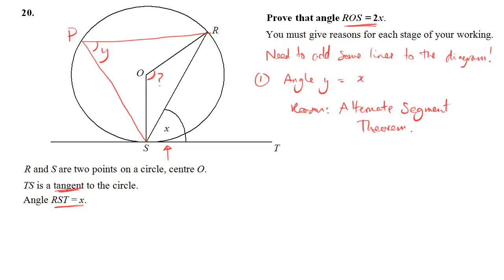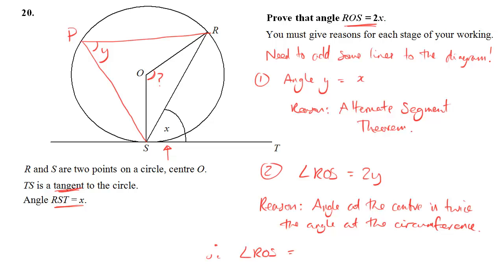The reason I've done this is because angle Y can link to the angle that we want. So, step 2 of my proof is to say that angle ROS, the one that I want, is 2 times Y. The reason: angle at the center is twice the angle at the circumference. So, we write our reason out there, and really, that's all we need to do. We just need to link these two things together. I've said that angle ROS is equal to 2Y, and given a reason. And I've said that Y is equal to X. So, 2Y must be equal to 2X, and that's what we wanted to prove. That's it.